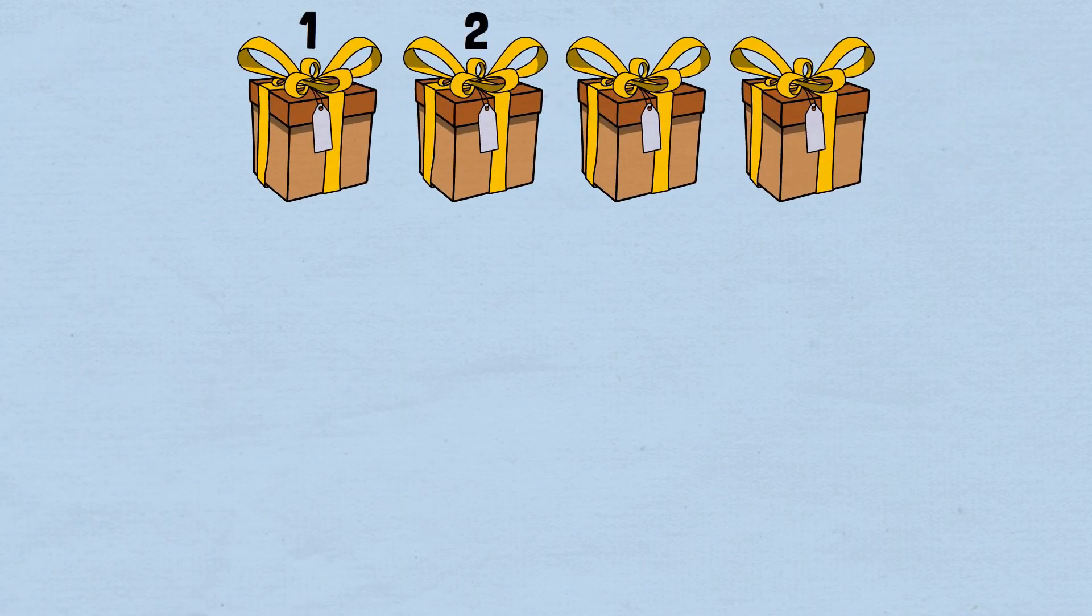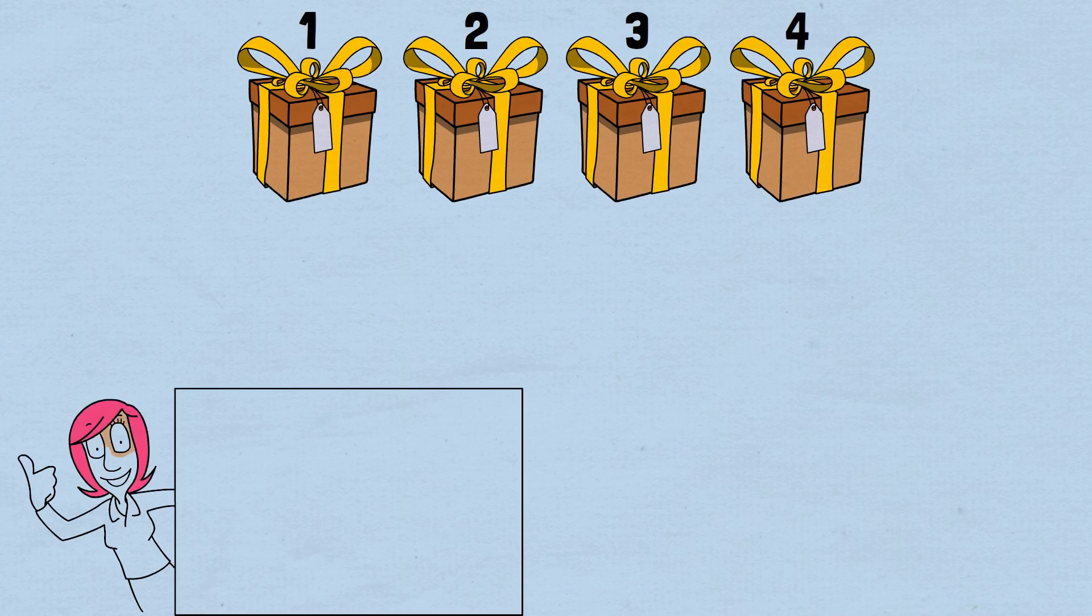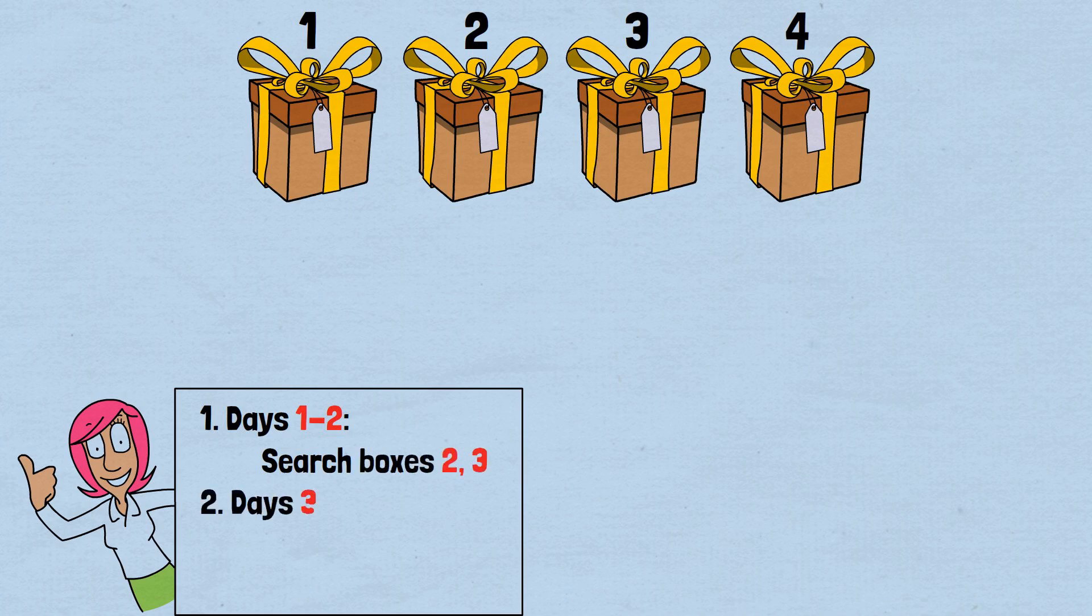Example: 4 boxes. For 4 boxes, our strategy would be: 1. Days 1 to 2: Search boxes 2, 3. 2. Days 3 to 4: Search boxes 3, 2, reverse order. This guarantees finding the cat within 4 days.